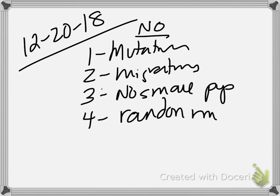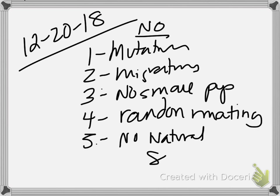Name a species that mates randomly. What's the second one? Migrations. Number five — the final thing that can cause a population to evolve, if it's not there you can keep the population in genetic equilibrium: no natural selection. That's what we said is the mechanism of evolution, so obviously if that's happening, the population's going to start to evolve.